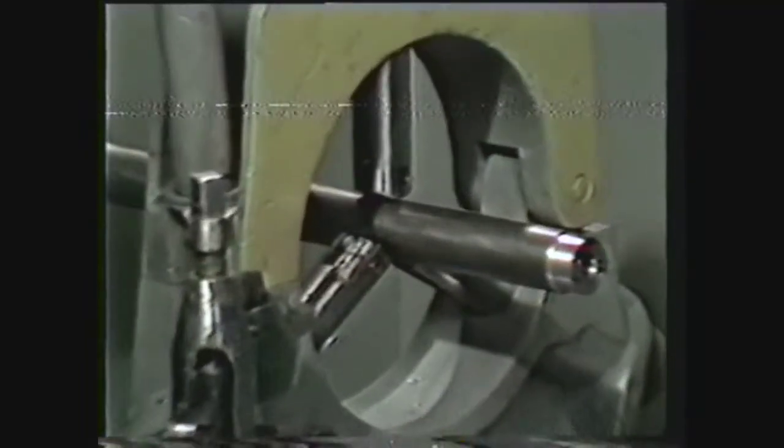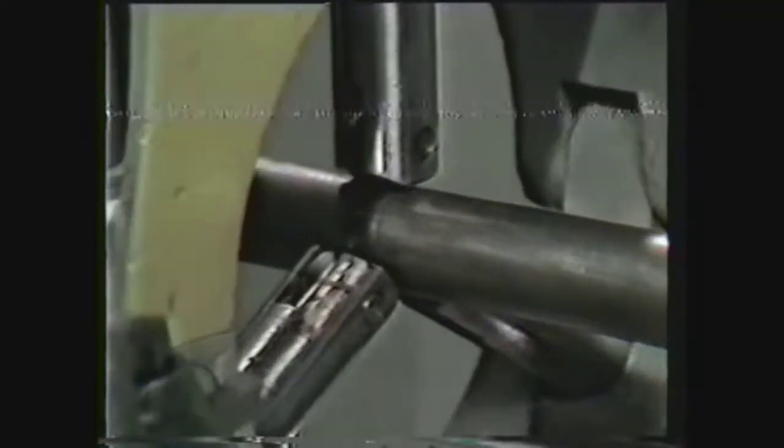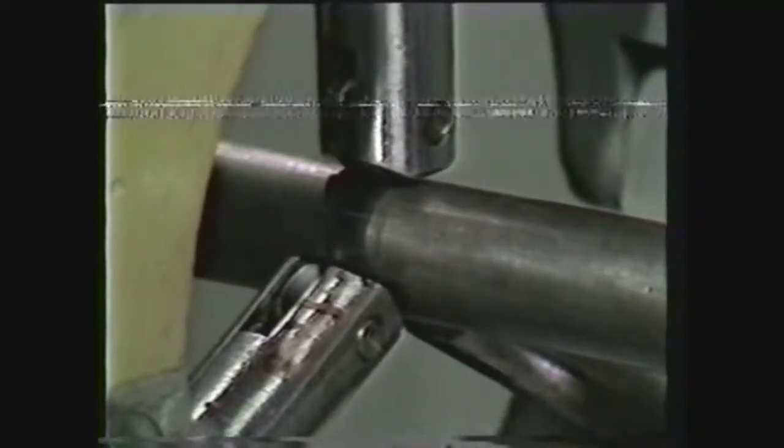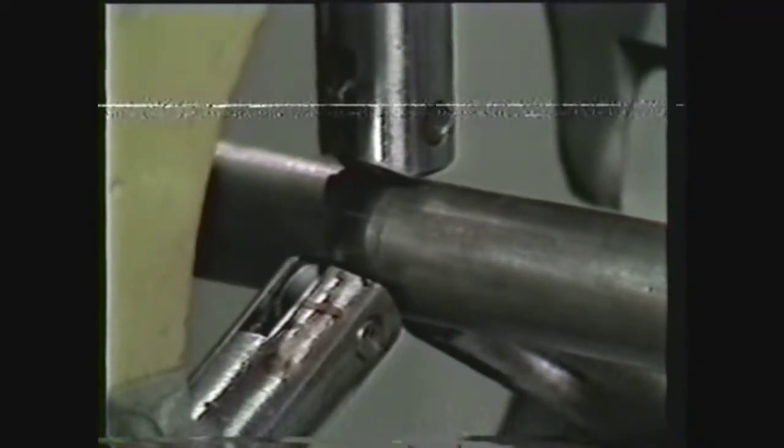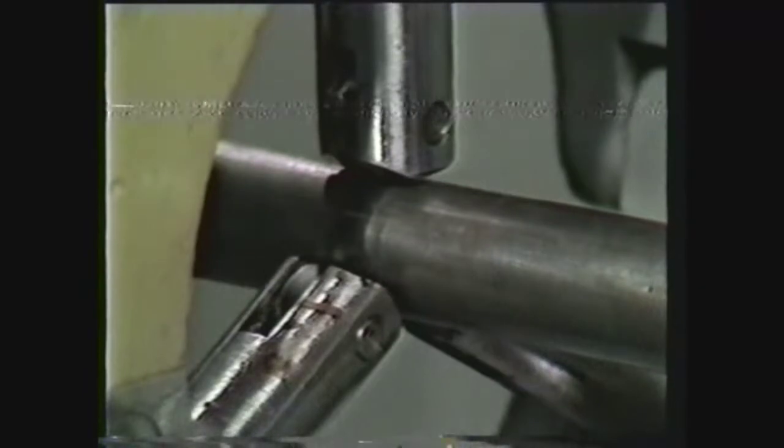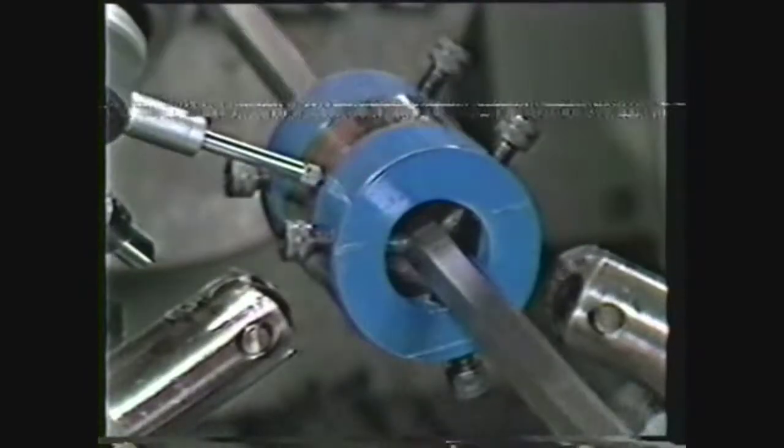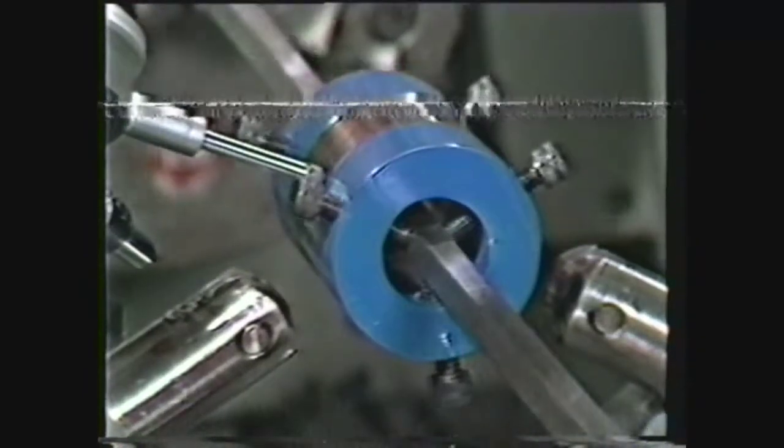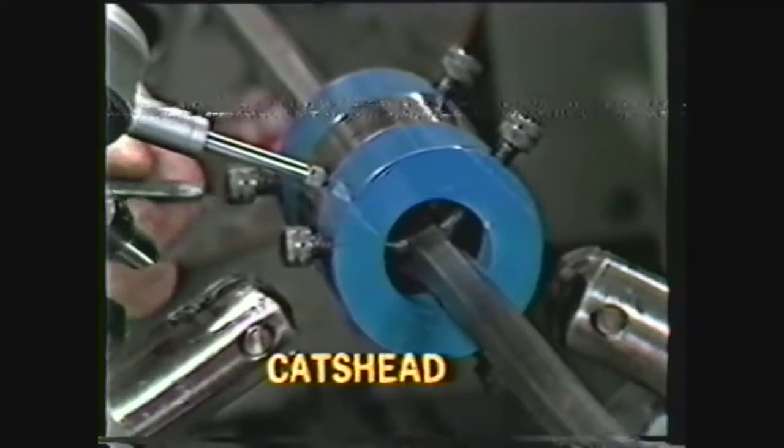The workpiece must have a concentric bearing surface where the jaws of the steady rest can be applied. This surface can be machined into the work diameter, or on irregular or small pieces, it can be provided by a cat's head.